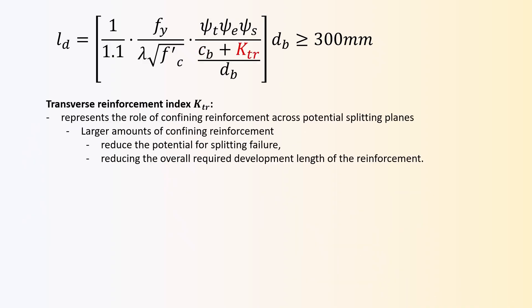The transverse reinforcement index, Ktr, represents the role of confining reinforcement across potential splitting planes. Larger amounts of confining reinforcement reduce the potential for splitting failure, thus reducing the overall required development length of the reinforcement.